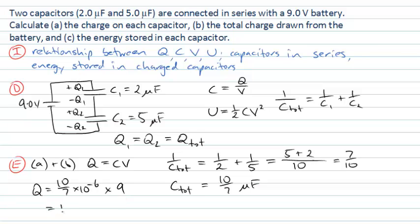That gives me a value of 12.9 by 10 to the minus six coulombs, which I might write, because my quantities have only been given to two significant figures, as thirteen microcoulombs. So that's the charge on each of the capacitors and the total charge drawn from the battery.